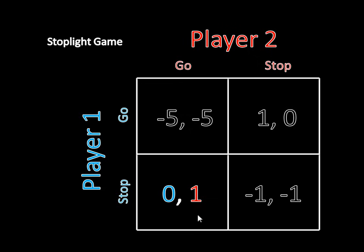Note that the players are not content doing the opposite of what the stoplight says. If they both go, someone is running a red light — whoever is at the red light could stop and do better, and even whoever has the green light would also want to stop since they're currently crashing. Either one of them would want to stop. Meanwhile, if they're both stopping, the person with the green light is just waiting unnecessarily — either one of them could go and do better. So these two outcomes are not Nash equilibria, for intuitive reasons you naturally understand from driving every day.